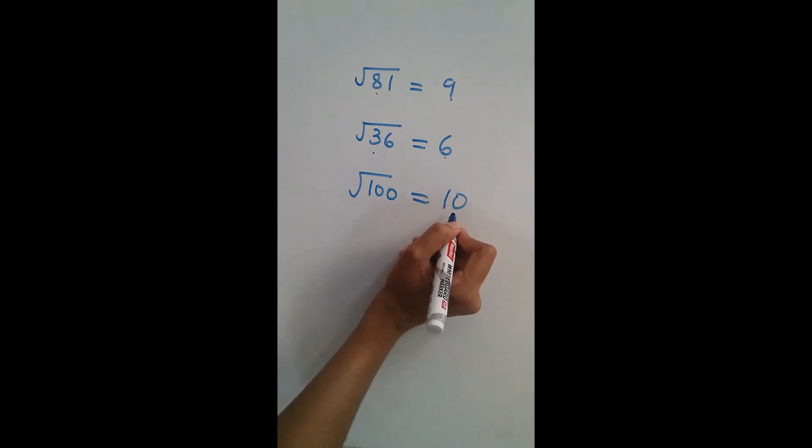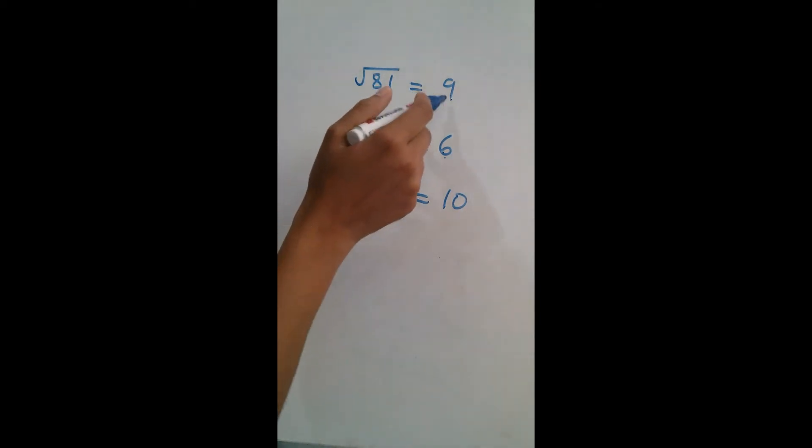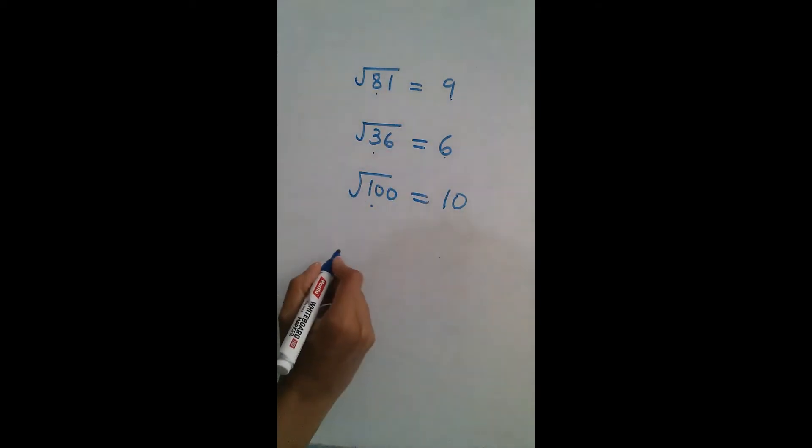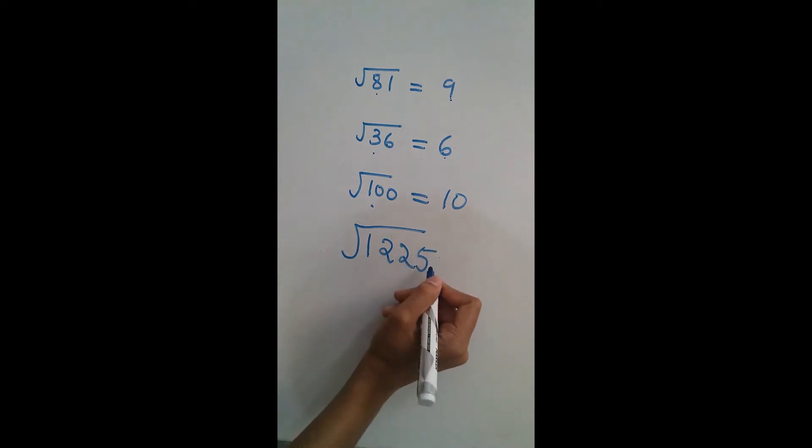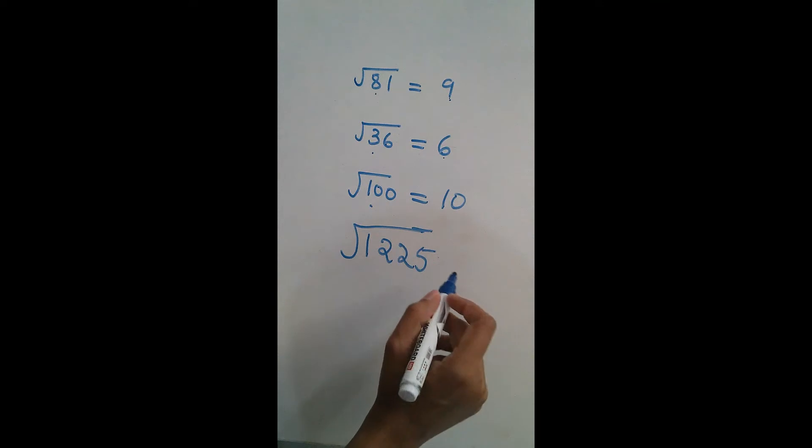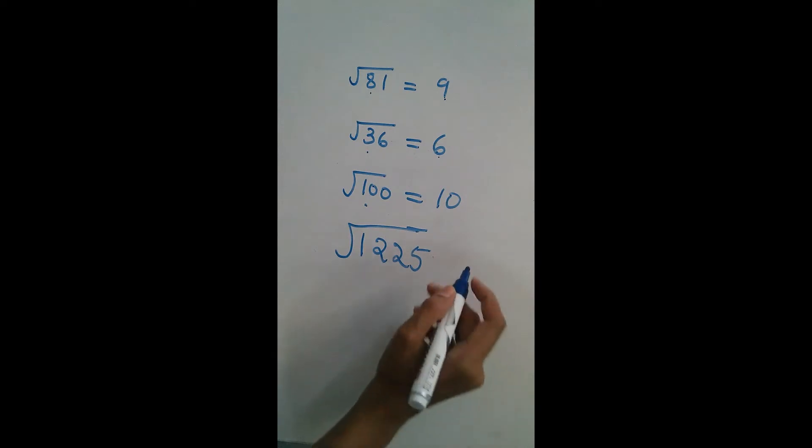That is, 10 if we multiply 2 times, then we are getting 100. It is easy to remember square root of these numbers. But if they give square root of 1225, 4 digit numbers, then we have to use certain methods. One of the methods is division method. Let's see.